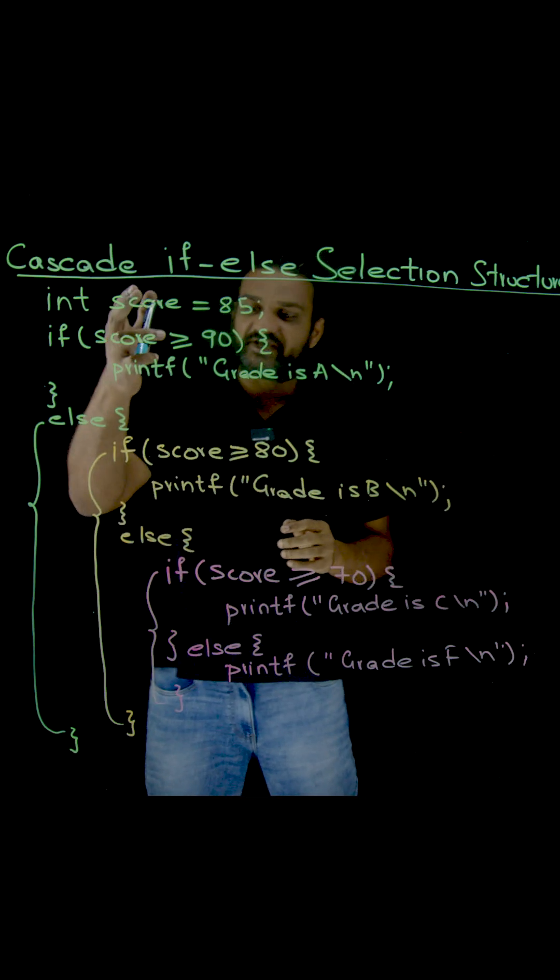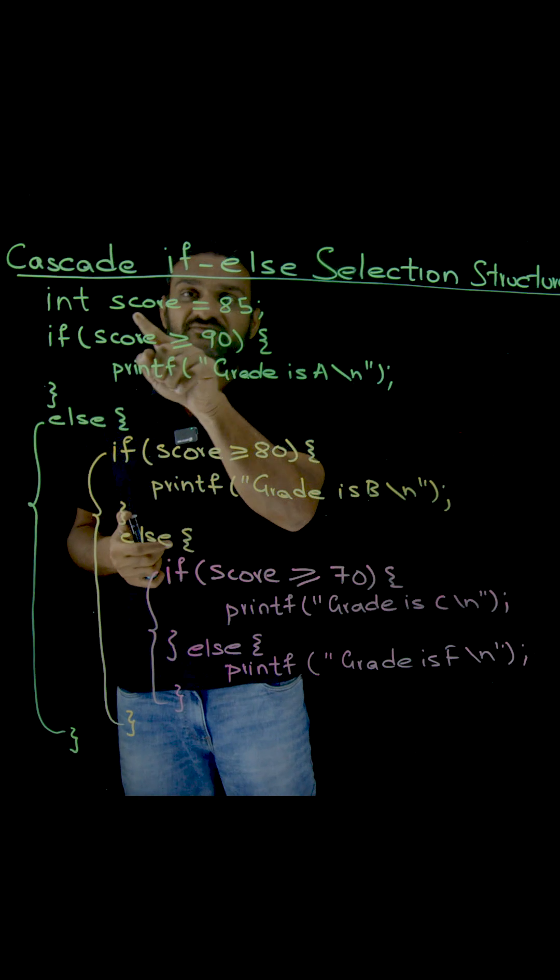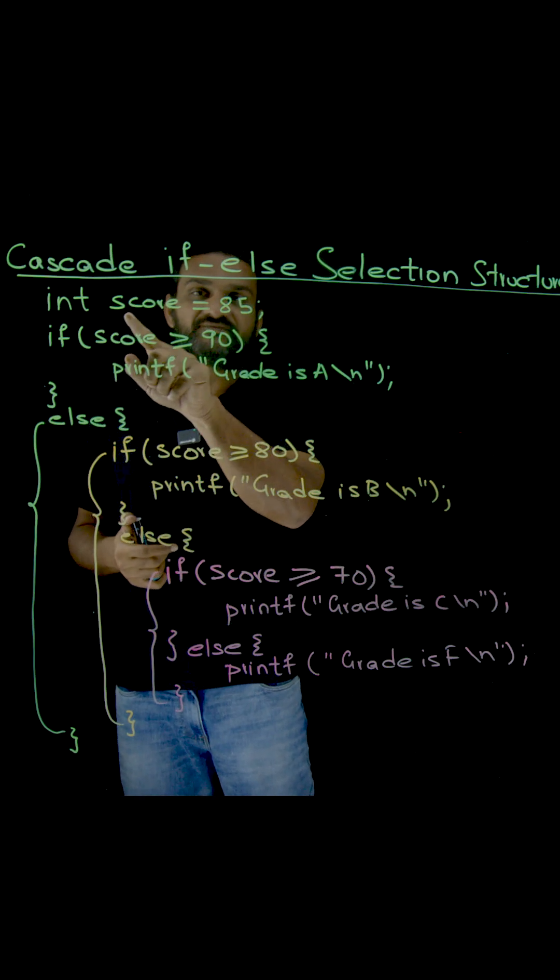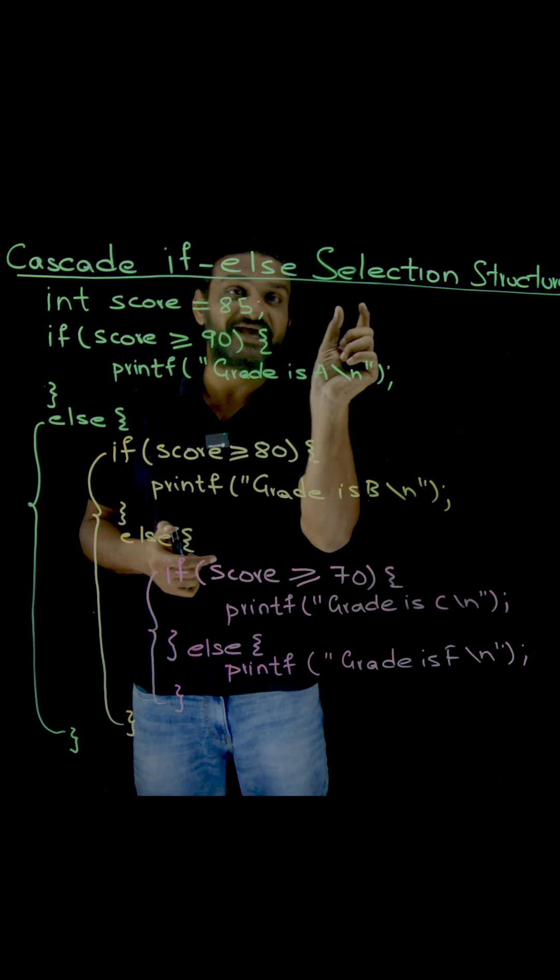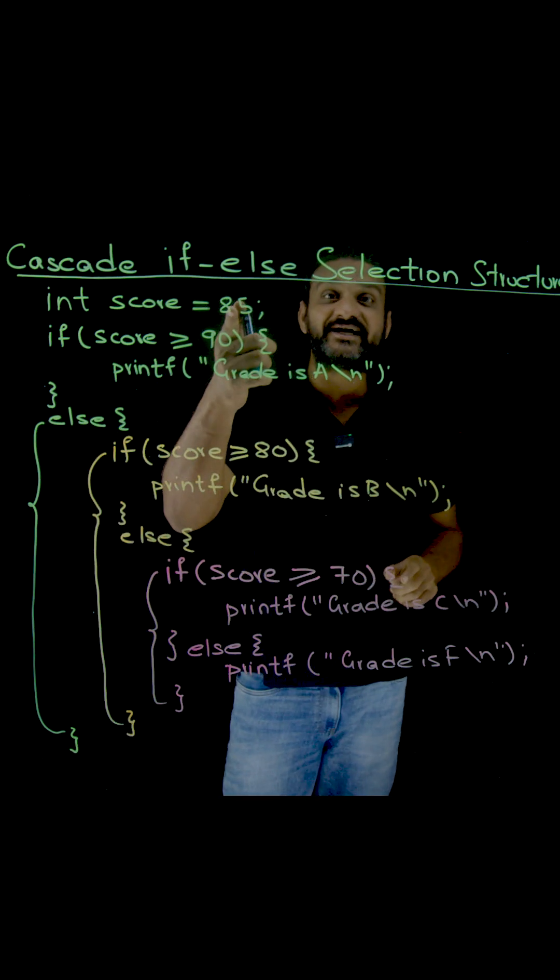Here I have taken this example. The initial value of score is an integer value. The value that is assigned for this score is 85. Now we have to allocate grade for this score.